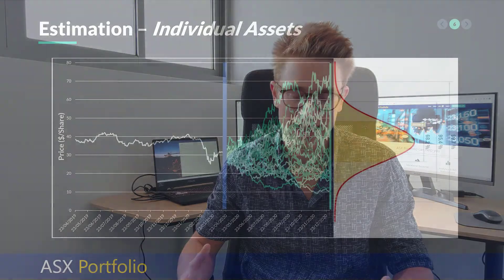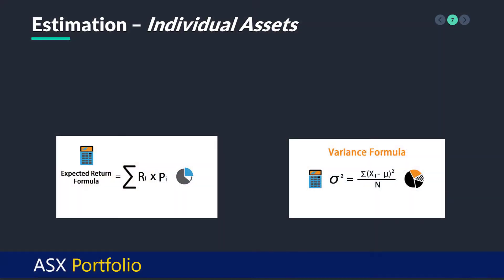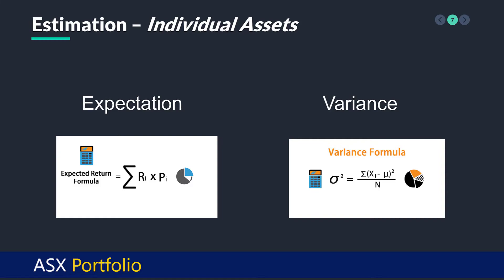If you don't know what covariance is, that's okay — we're going to explain it simply. Essentially, what do we know from our asset? Let's say we have the Commonwealth Bank of Australia. We have to estimate the potential future distribution of returns going out into the future. Obviously, we don't know what this stock is going to return to us in the future. We could draw up our distribution as you see in this diagram.